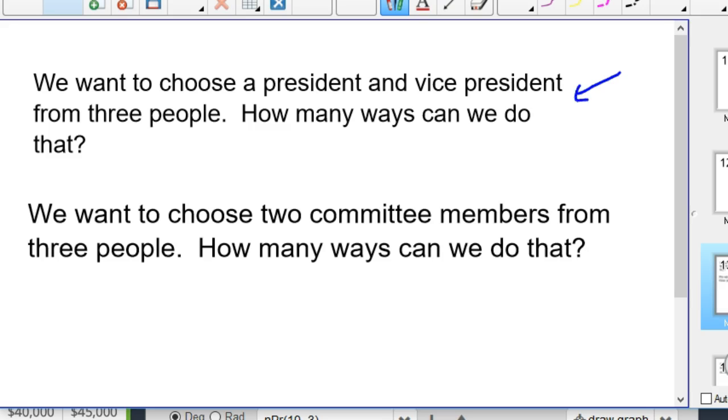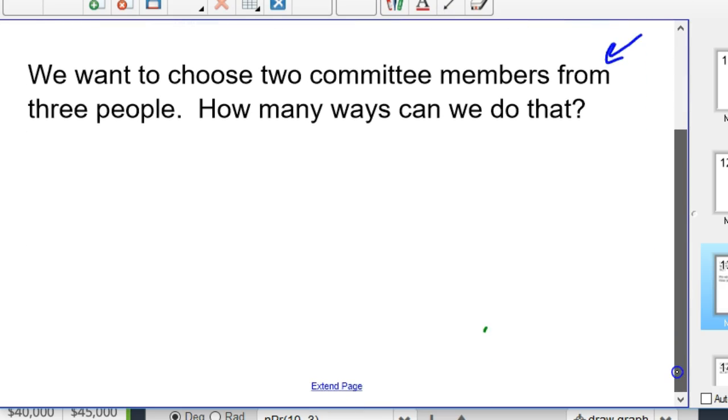In this top one, this is a permutation, and I've already made a video on that. If you don't know what permutation is, I would go watch permutation first. Here, the order matters. Order is important. If we're talking about two committee members, which we have in this case, order is not important. And that's how we know we have a combination. So go ahead and pause the video, see if you can solve this problem. How many ways can we choose two committee members from three people?